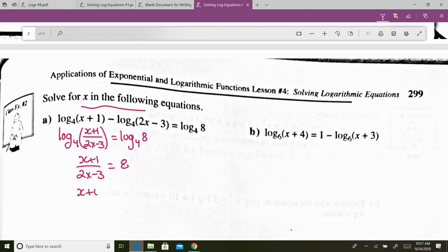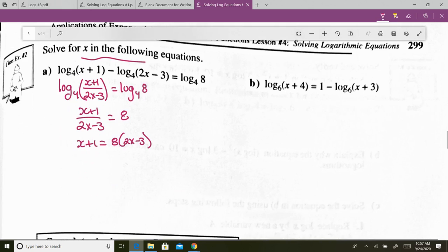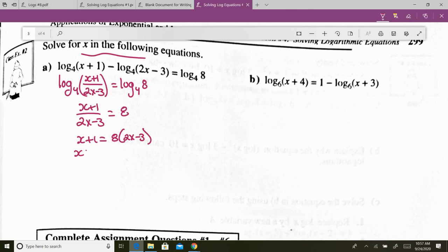And then you algebra it. So, x plus 1 is equal to 8 times 2x minus 3. Being x minus 24. So, it reduces to 5 over 3.